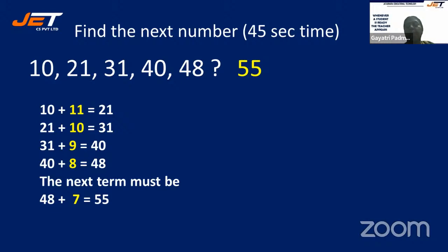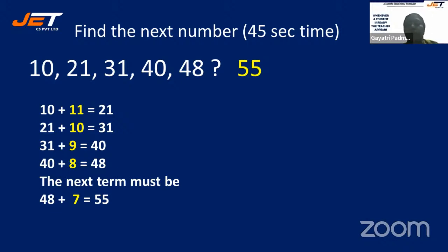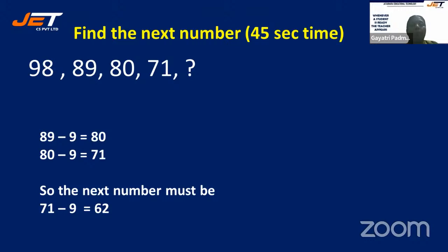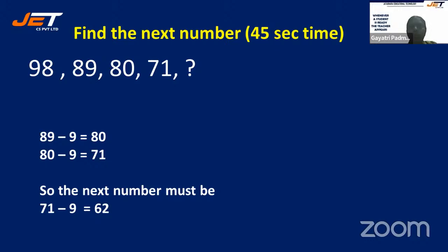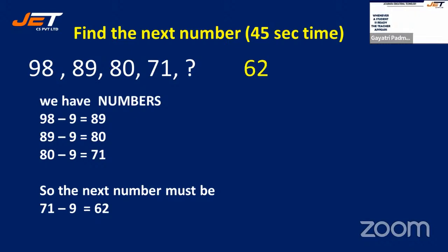You can solve these problems only with good practice. Now let's move on to the next question: 98, 89, 80, 71. Here 89−9 is 80, 80−9 is 71. So the next must be 71−9, which is 62.